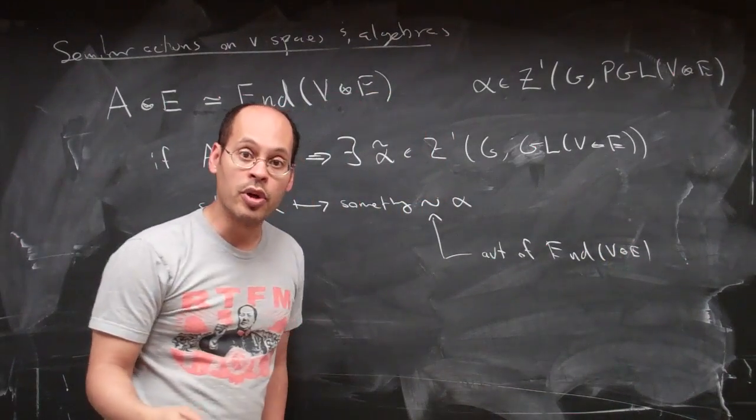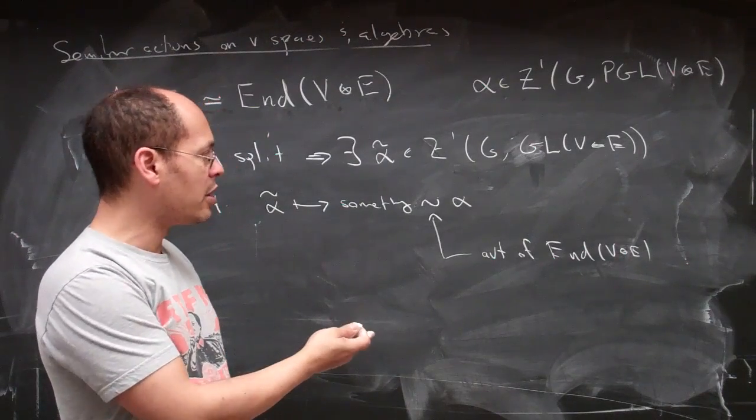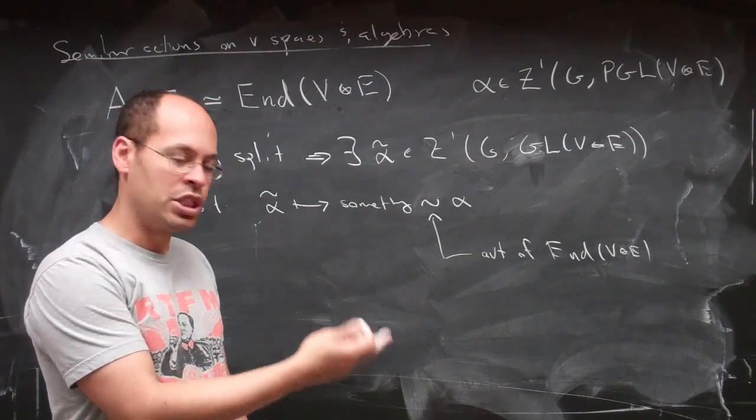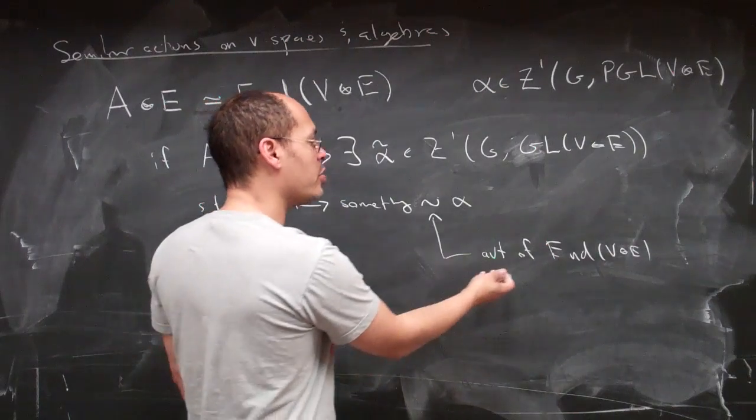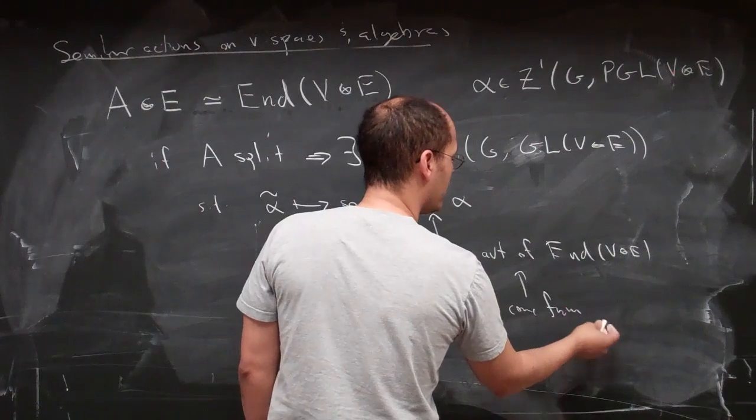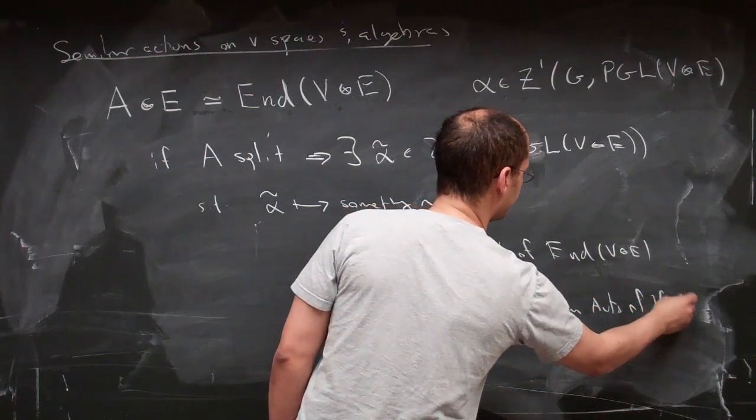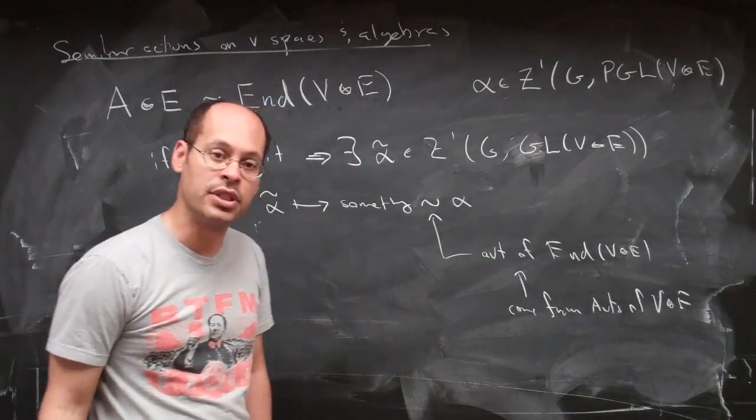Of course, the automorphisms of V tensor E, this is PGL, everything is inner, it's all coming from things in GL. That is, all these automorphisms here, these all come from automorphisms of V tensor E. Changes of coordinates in V tensor E.